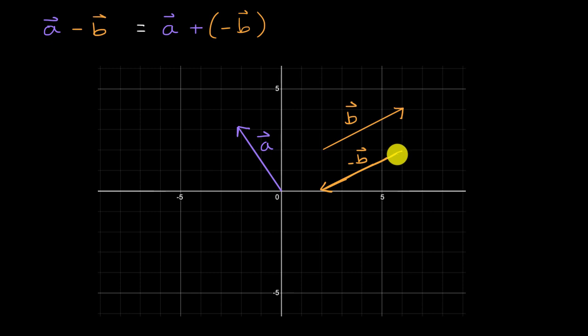Well, there's two ways of thinking about that. I could put the tails of both of them at the same starting point, might as well do the origin. So let me draw negative b over here. So we know the vector negative b looks like that.